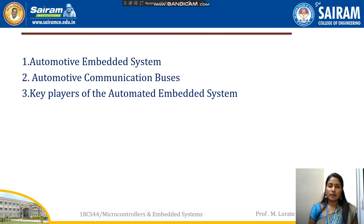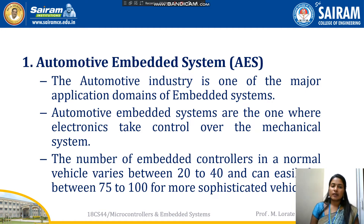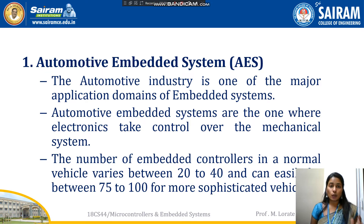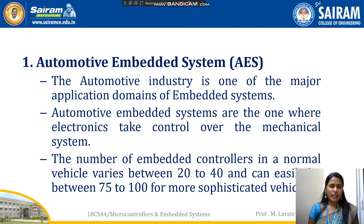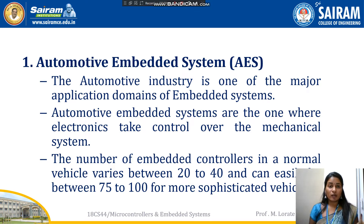First, automotive embedded system. The automotive industry is one of the major application domains of embedded systems. In automotive embedded systems, electronic devices are taking control over mechanical systems. If you take a normal vehicle, there will be 20 to 40 embedded control units. But if you take luxury vehicles like BMW, there will be 75 to 100 embedded control units.